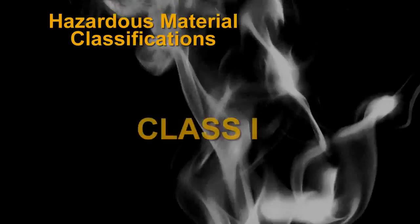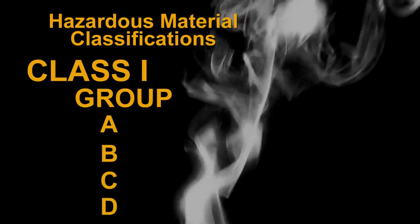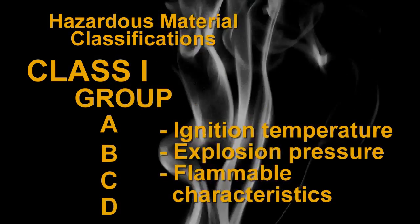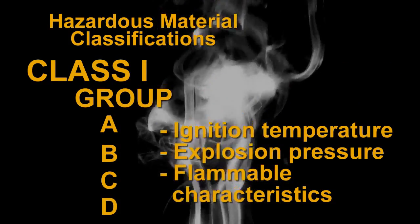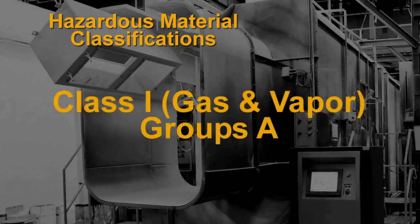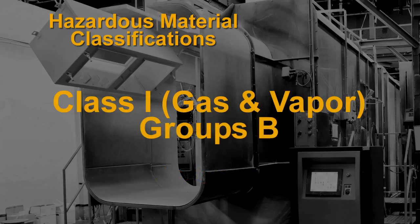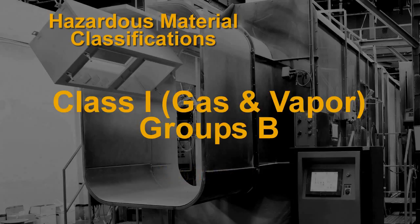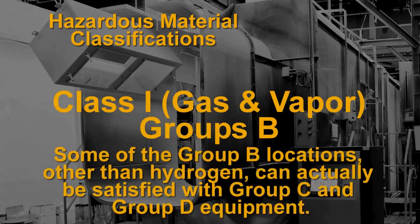The gases and vapors of Class 1 locations are broken into four groups by the code: A, B, C, and D. These materials are grouped according to the ignition temperature of the substance, its explosive pressure, and other flammable characteristics. The only substance in Group A is acetylene, a gas with extremely high explosion pressures. Group B includes hydrogen and other materials with similar characteristics. By following the NEC code, some Group B locations other than hydrogen can actually be satisfied with Group C and Group D equipment.